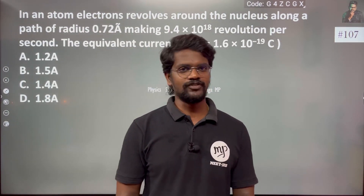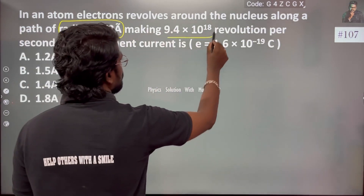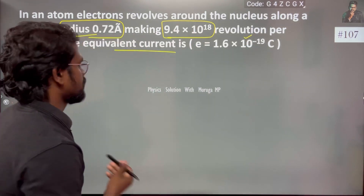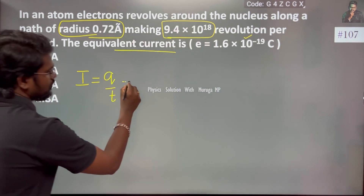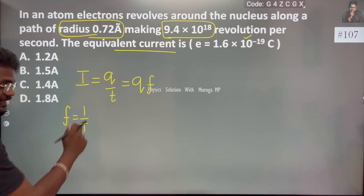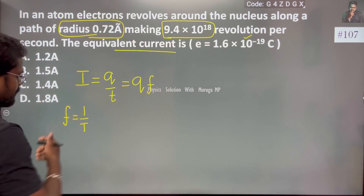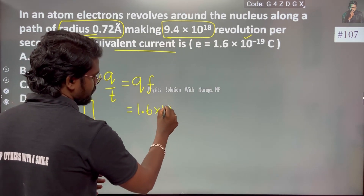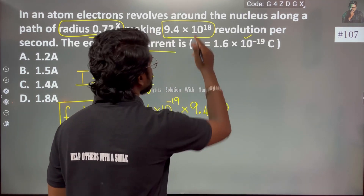So the current is given by I = q/t, which means I equals charge multiplied by frequency. So I = q × frequency = 9.4 × 10¹⁸.